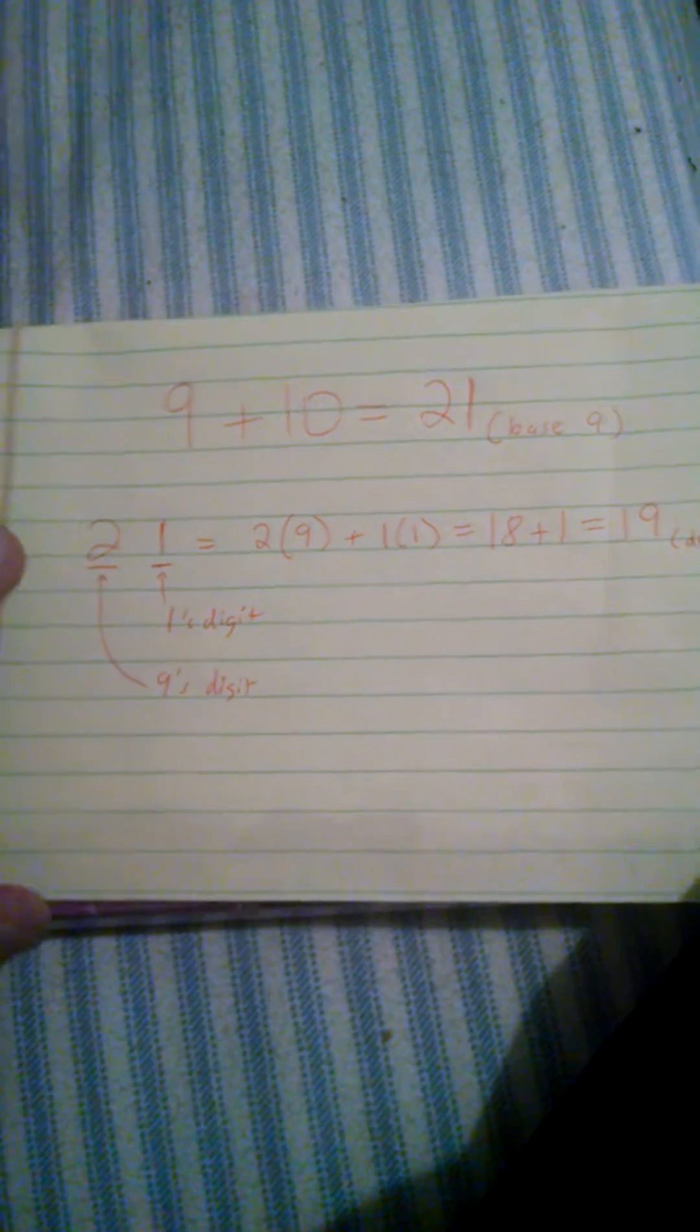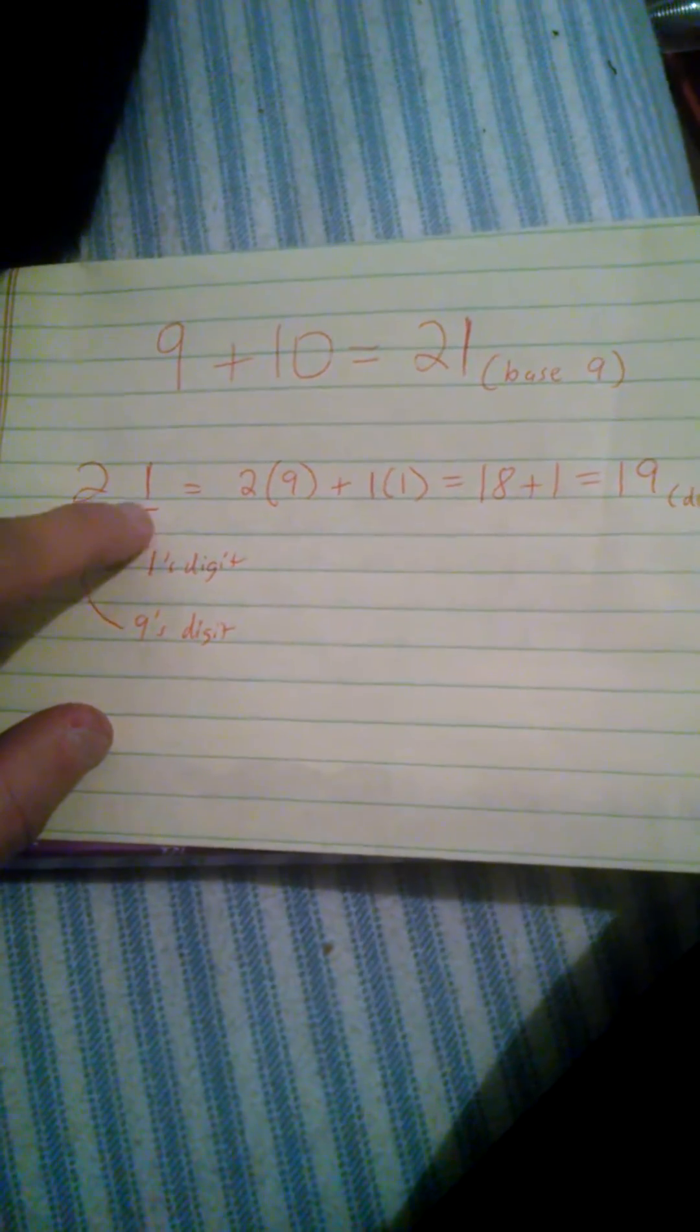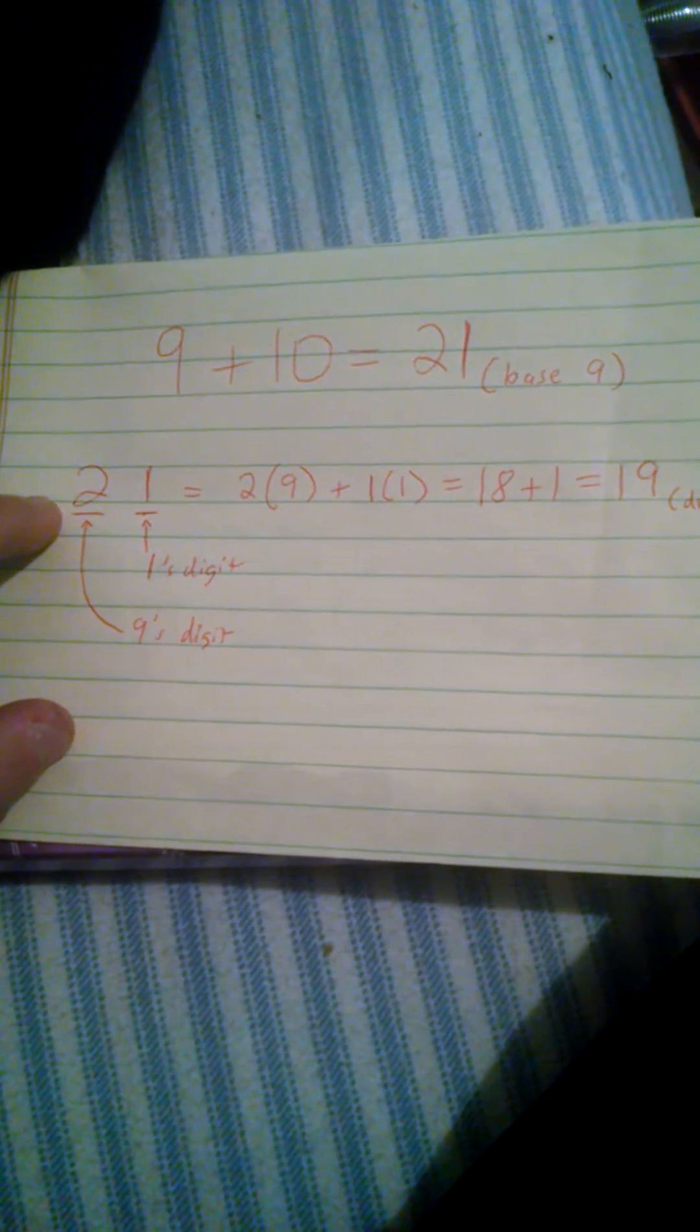If you're not familiar with different base systems, we use the decimal system, which is based on base 10. So the first digit of any number is the ones digit, the second digit is the tens.